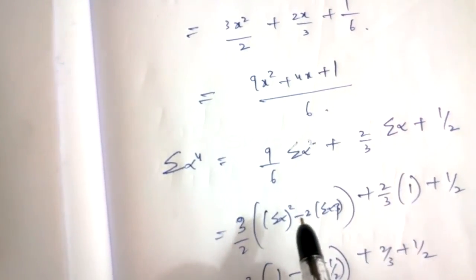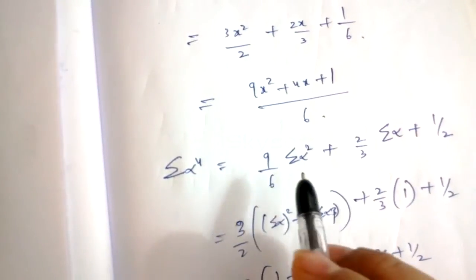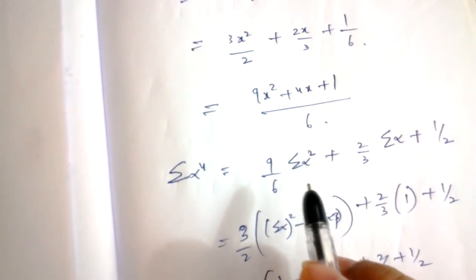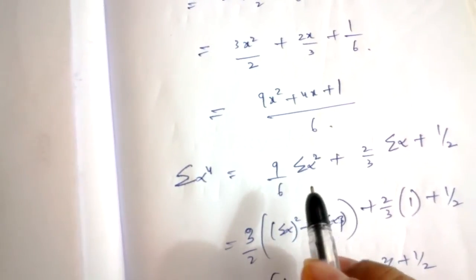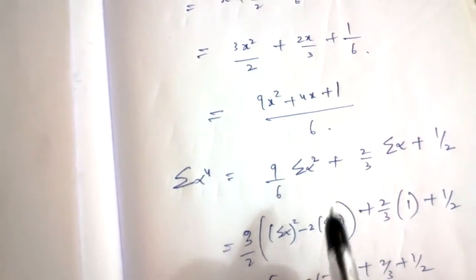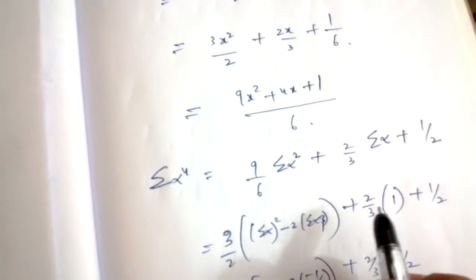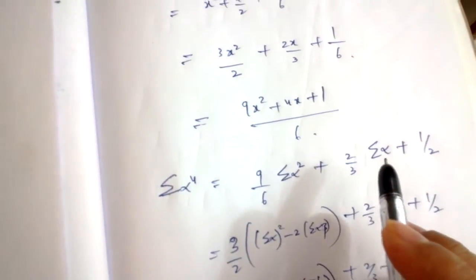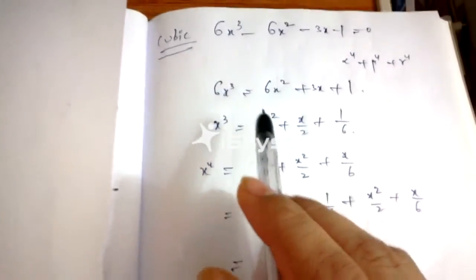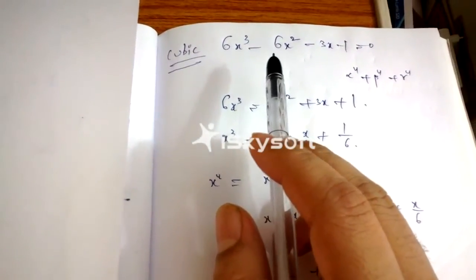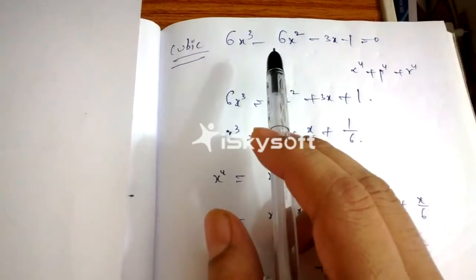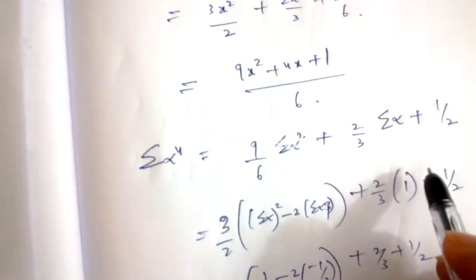Now I need to write Σα² as (Σα)² minus 2·Σαβ. This is like (a + b + c)² = a² + b² + c² + 2(ab + bc + ca), so a² + b² + c² = (a + b + c)² − 2·Σab. So instead of ab you have αβ here. The sum of the roots is −b/a, which is −(−6)/6 = 1.